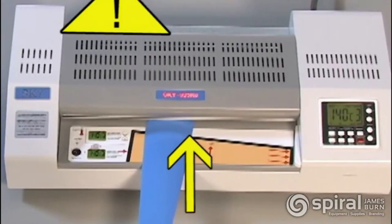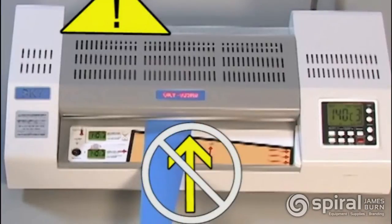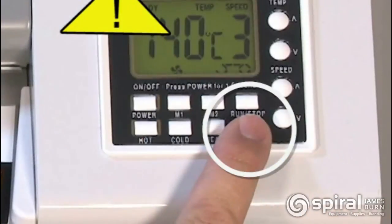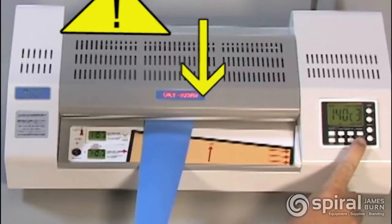Warning: to avoid injury, keep hands, jewelry, clothing and other objects away from the laminator input slot. Objects placed in the slot are pulled into the machine automatically. If this happens, press and hold the red reverse button to eject the object.